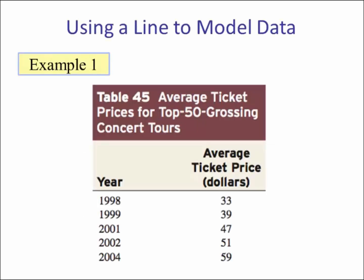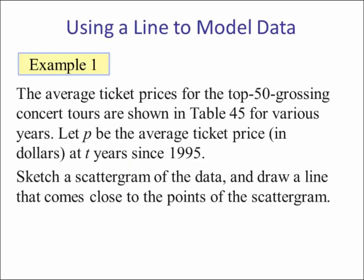Lesson objective number one. Example one: the average ticket price for the top 50 grossing concert tours are shown in table 45 for various years. Let p be the average ticket price measured in dollars at t years since 1995. Sketch a scattergram of the data and draw a line that comes close to the points of the graph.